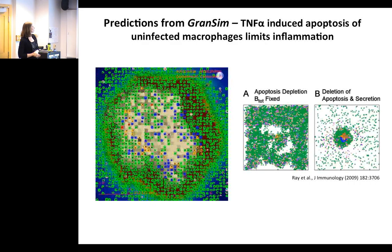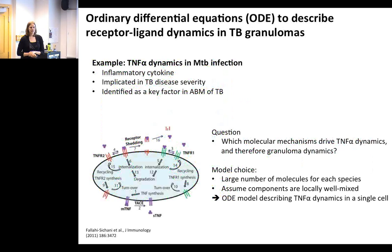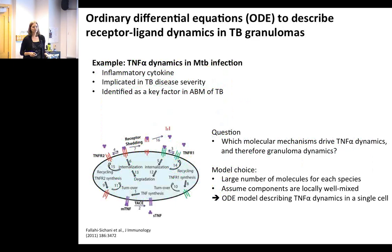Next we move to ODEs, which we use to describe receptor-ligand dynamics in our granuloma. Going back to TNF-alpha — it's an inflammatory cytokine implicated in TB disease severity, and we identified it as important to granuloma development. Our next question is: which molecular mechanisms drive TNF-alpha dynamics? For this model choice, we need a model that can track many species, and we can assume that locally the components are well mixed, since every cell in a grid compartment has access to the molecules in that compartment. Therefore we chose an ODE model.